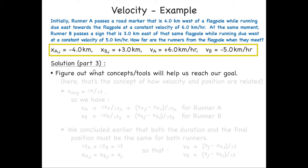So we'll write down all those known quantities, keep them pulled out. And let's figure out what concepts or tools will help us to reach our goal. Here, the concept that's relevant is how is velocity related to position. We know that for a constant velocity, then instantaneous and average velocities are all the same thing. So we can conveniently write down that the average velocity is just the change in position over the change in time.